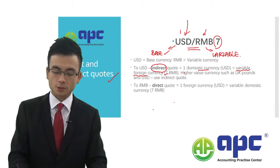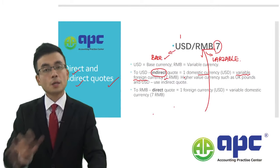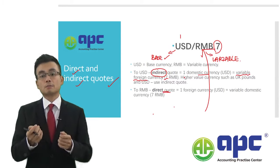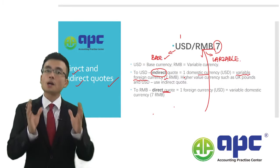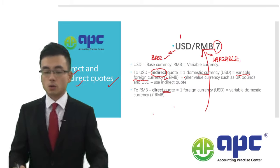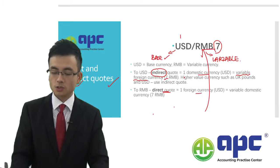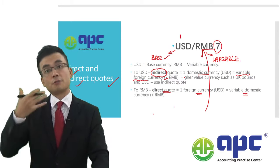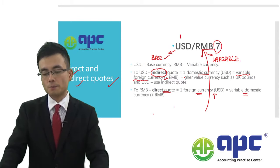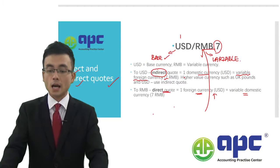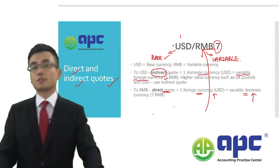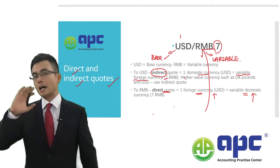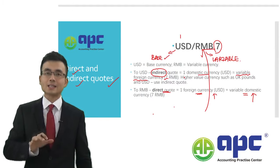From the RMB's point of view, this quote is quite direct, because with RMB, I have to give up seven to buy one USD — just like giving up seven to buy one share. The direct quote is: one foreign currency equals the variable domestic currency. If I were to have one USD as my foreign currency from the Chinese point of view, I have to give up my own currency — it's quite direct. But remember, for higher value currencies such as the USD and UK pound, it tends to have the indirect quote.